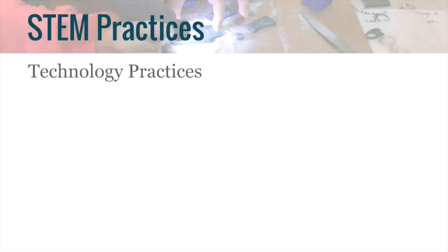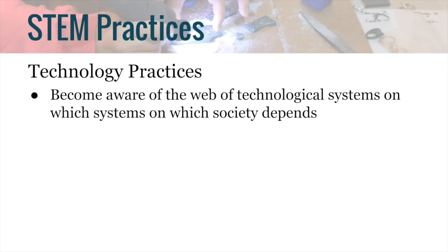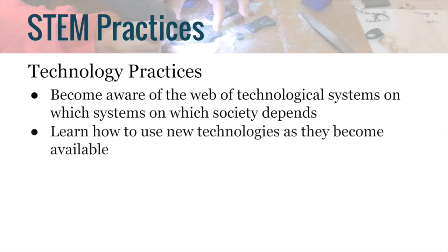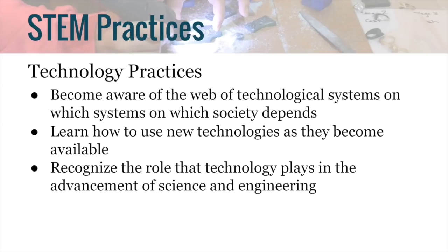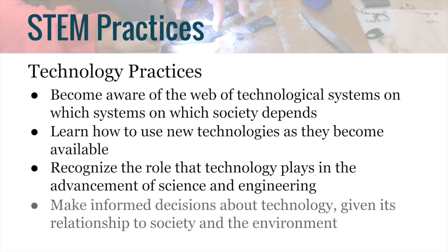Here are the technology practices. Practice one: become aware of the web of technological systems on which society depends. Help students think more broadly about technology and emphasize how technologies created by humans are here to serve our needs and desires. Practice two: learn how to use new technologies as they become available — help students learn how to use new technology, how to choose appropriate ones for a situation, and observe how others use technology. Practice three: recognize the role that technology plays in the advancement of science and engineering. Practice four: make informed decisions about technology given its relationship to society and the environment.